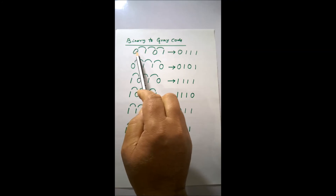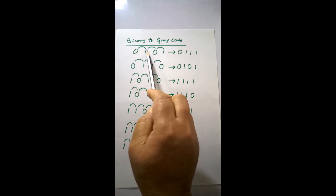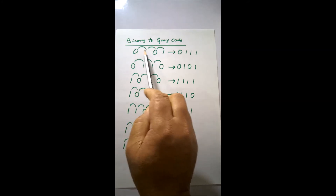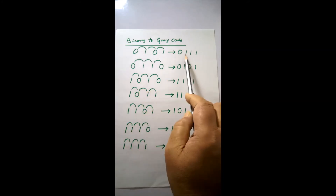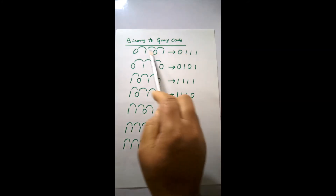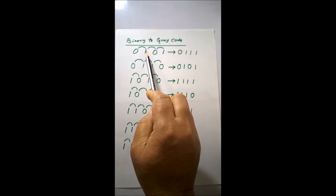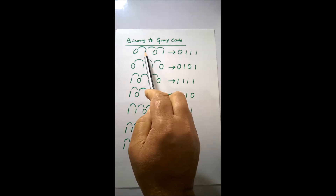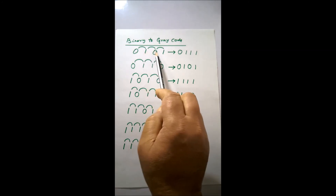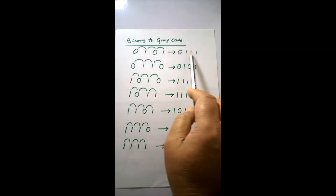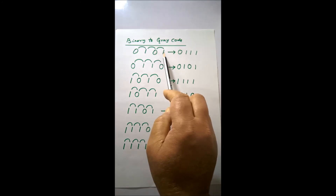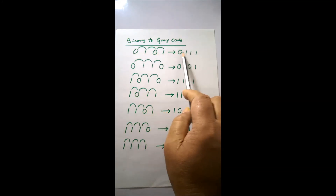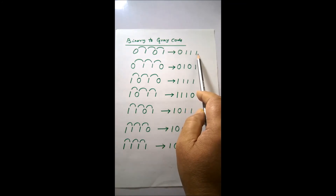Then you XOR it with the next bit. For example, 0 XOR 1 gives 1, so you write 1. Then XOR the second and third bits: 1 XOR 0 gives 1, write 1. Then 0 XOR 1 gives 1, write 1. This gives you the Gray code from the binary number.